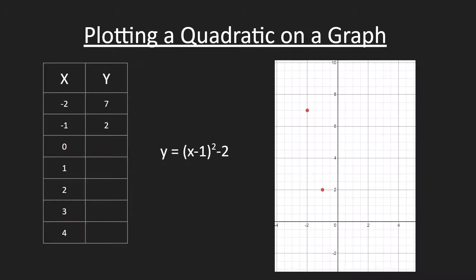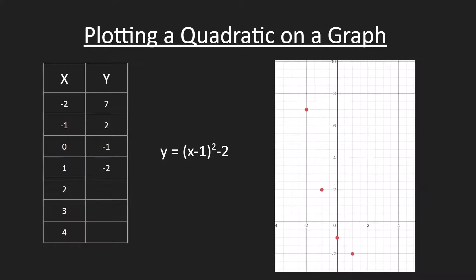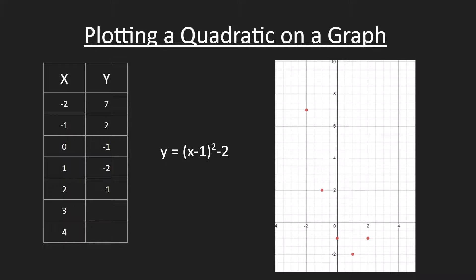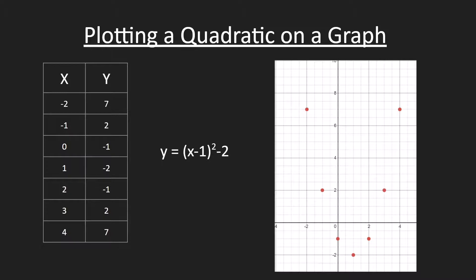When x is negative 1, y equals 2. When x is 0, y is negative 1. When x is 1, y is negative 2. When x is 2, y is negative 1. When x is 3, y is 2. When x is 4, y is 7.